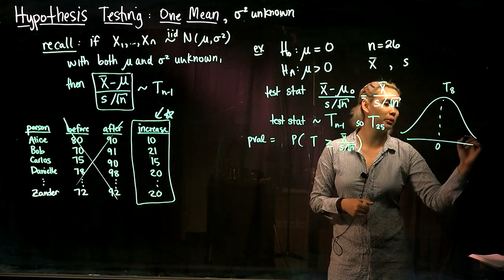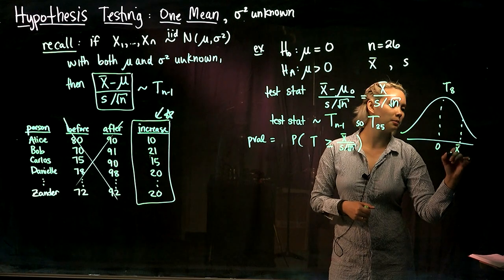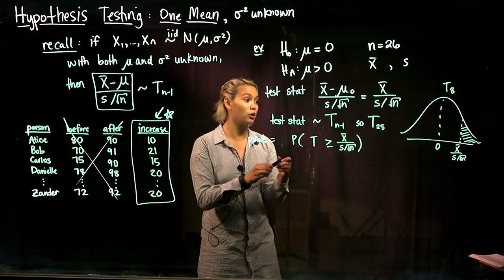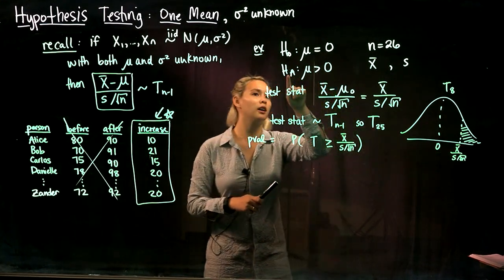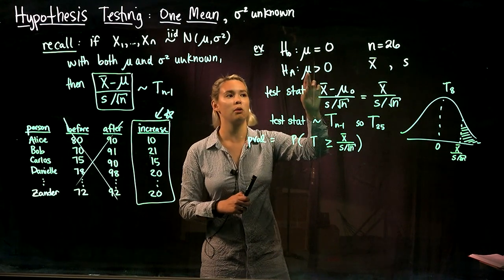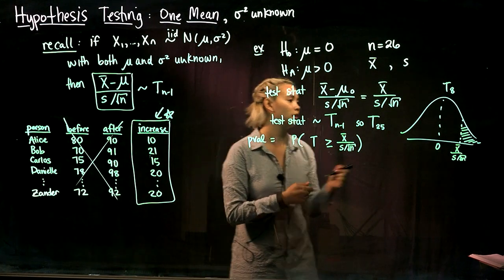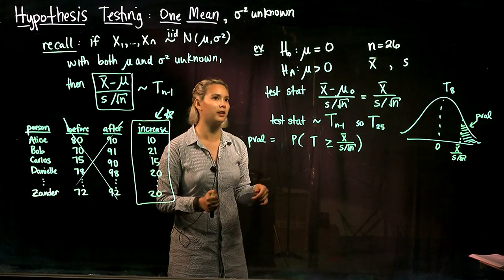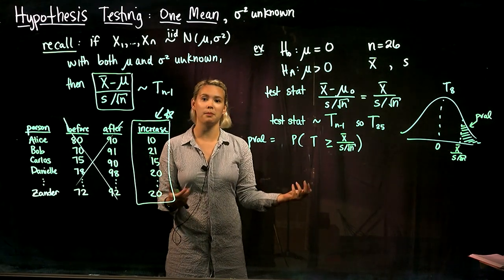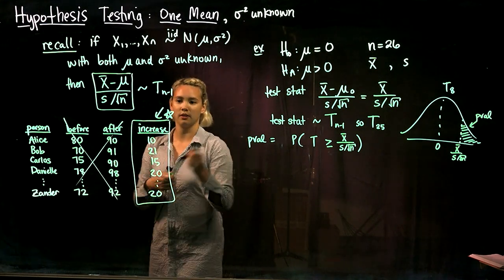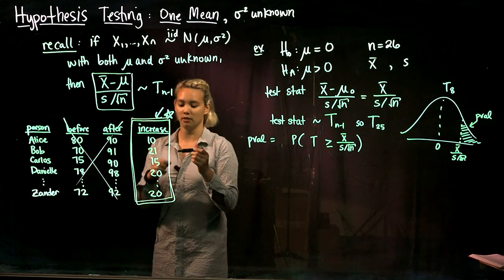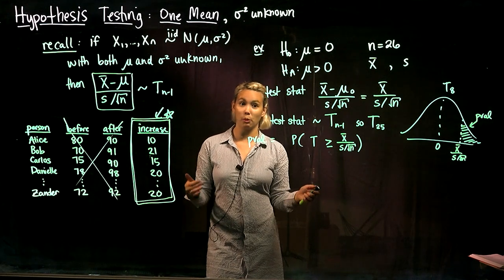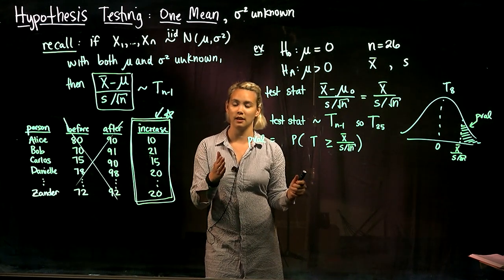So here's our t distribution with 25 degrees of freedom. It's centered at zero. We would draw in our particular test statistic x̄ over s over root n, and then our p-value would be that area there. So we're just shading that upper area because our alternative hypothesis is μ is greater than zero. So we would look at the area above our particular test statistic. So there would be our p-value. Okay, so we can see that if we want to do a hypothesis test and we have paired data, let's just use this new variable that we've created, which is just the difference between those two variables.